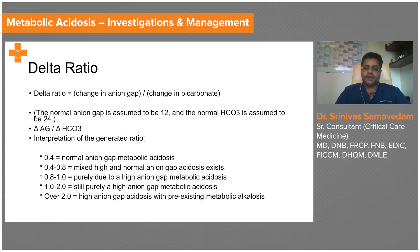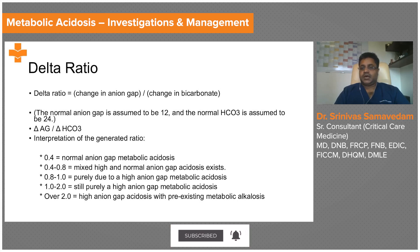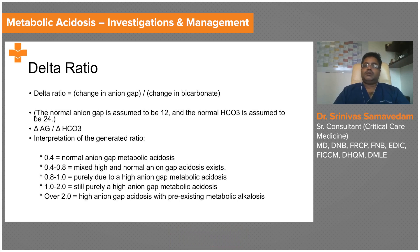Interpretation of the delta ratio: if it is less than 0.4, you are looking at a normal anion gap metabolic acidosis. If it is between 0.4 and 0.8, there is a mixed high and normal anion gap metabolic acidosis. If it is between 0.8 and 2, there is a purely high anion gap metabolic acidosis. If it is more than 2, there is a high anion gap metabolic acidosis with a pre-existing metabolic alkalosis, which could be a primary metabolic problem or compensation for a respiratory problem.